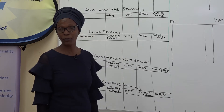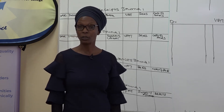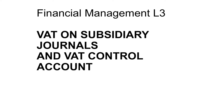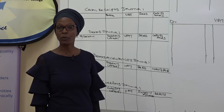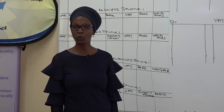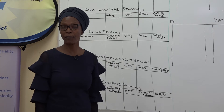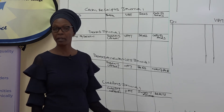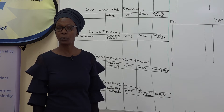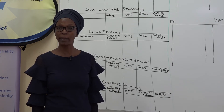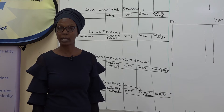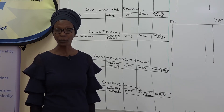Now we have to enter the VAT to the different subsidiary journals and prepare the VAT control accounts. As you know our accounting cycle: cycle number 1 is transaction, cycle number 2 is preparing the subsidiary journals and posting to the ledger. Before we start entering transactions to the subsidiary journals, let me firstly explain the subsidiary journals we are going to open.